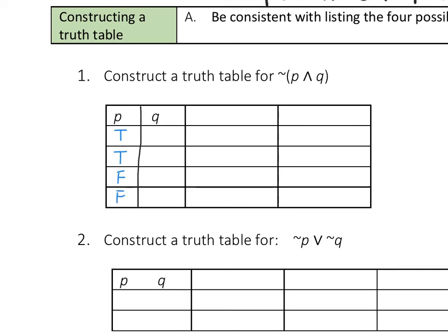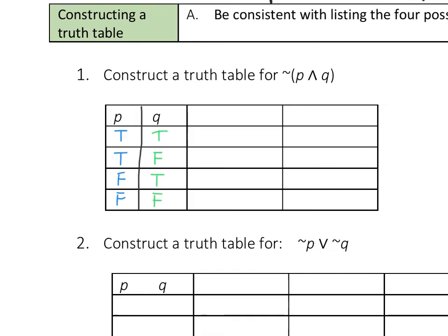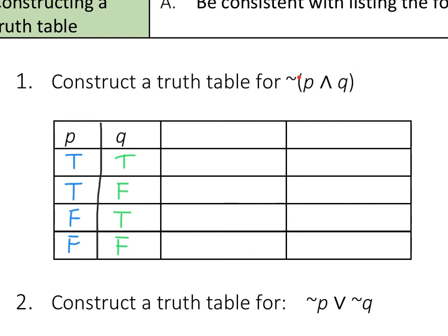Then with Q: if P is true, Q could be true; or if P is true, Q could be false. If P is false, Q could be true; or if P is false, Q could be false. So we always start it this way. For P, it's true, true, false, false. For Q, we always alternate true, false, true, false. Now we want to construct this truth table for the statement not, quantity P and Q.